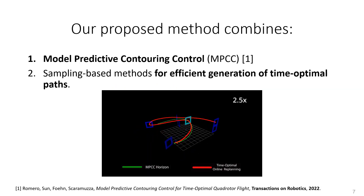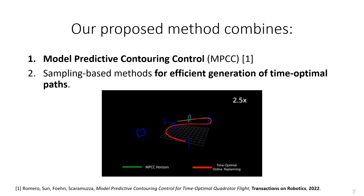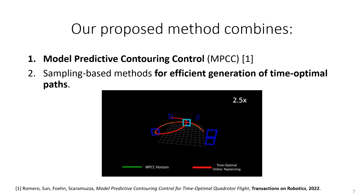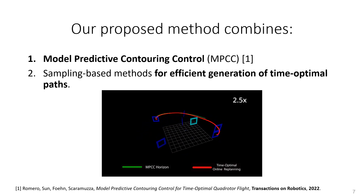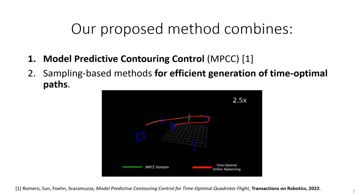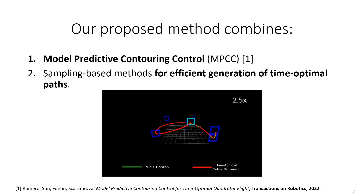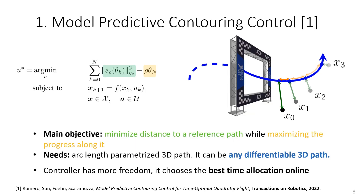The proposed method combines model predictive contouring control, which is the state-of-the-art in model-based agile flight, with an efficient trajectory generation algorithm. This combination allows us to fly in minimum time while being able to deal with changing conditions, like moving gates or strong winds. But what is model predictive contouring control, also known as MPCC?